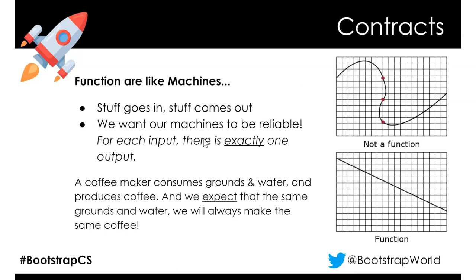For a function, for one input there is exactly one output. You can see that for a given X, if there's more than one output, it's not a function. That might be a perfectly fine curve and equation, but we're only going to use the term function when there's exactly one output.